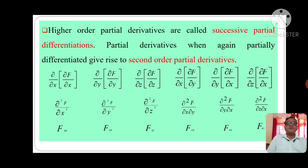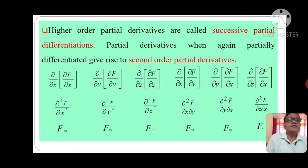Now, del²f by del x² is denoted by f_xx. Del²f by del y² is denoted by f_yy. Del²f by del z² is denoted by f_zz. Del²f by del x del y is denoted by f_yx. Del²f by del y del x is denoted by f_xy. Del²f by del z del x is denoted by f_xz.